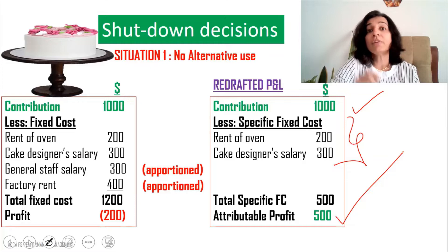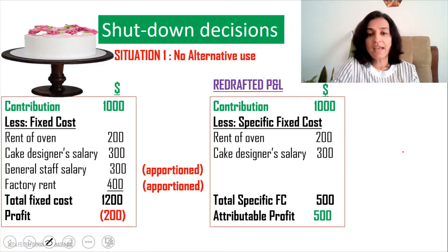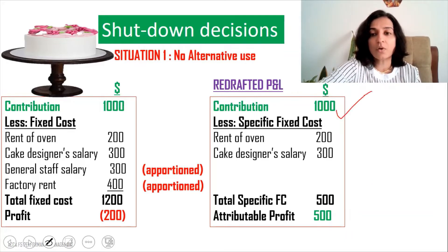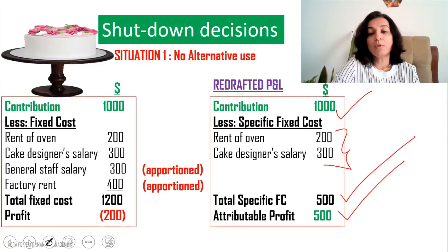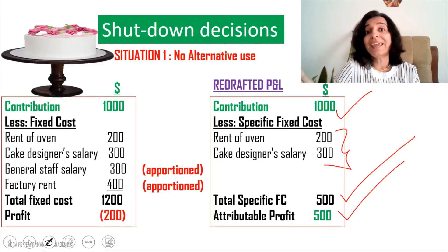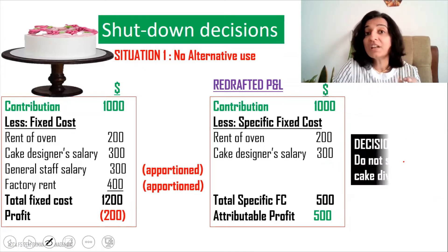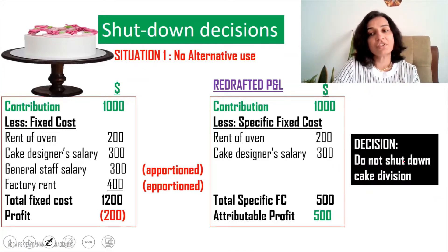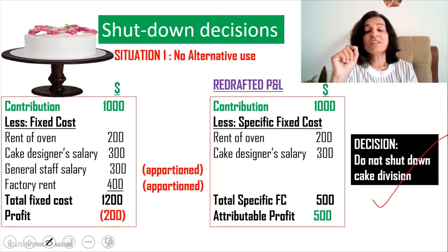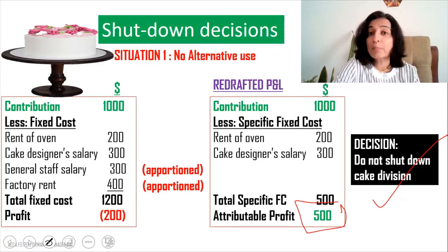The attributable profit is the profit exclusively related to the cake division. Contribution of $1,000 minus specific fixed costs of $500 gives an attributable profit of $500. It's a positive figure, which means shutting down the cake division would cause a loss of $500. Since the attributable profit is positive, the decision is do not shut down the cake division.